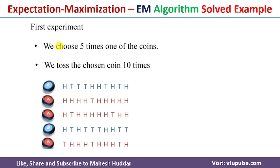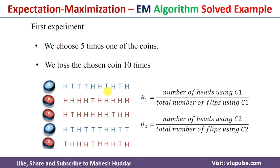In the first experiment, I will choose one of the two coins five times and then toss that particular coin 10 times. In the first iteration, I selected coin B; in the second iteration, I selected coin A, and so on. After tossing each coin 10 times, I get different values for heads and tails. Based on these values, we can easily calculate theta 1 and theta 2. Theta 1 equals the number of heads using C1 divided by the total number of flips, and theta 2 equals the number of heads using C2 divided by the total number of flips.